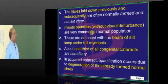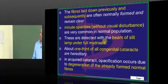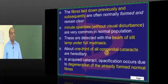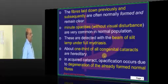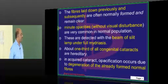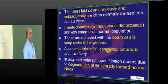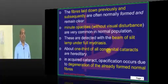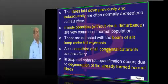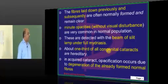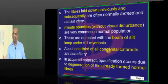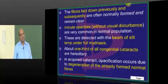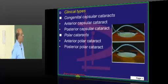So you have minute opacities. If you examine the normal population routinely you will find many small developmental opacities, but they don't affect visual acuity. You need to give mydriasis and use slit lamp examination to detect them. About one third of congenital cataracts have a hereditary predisposition — this is fundamental to remember. Acquired cataract means opacification and degeneration of already formed fibers.